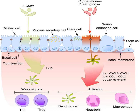The lung microbiota is the pulmonary microbial community consisting of a complex variety of microorganisms found in the lower respiratory tract, particularly on the mucous layer and the epithelial surfaces. These microorganisms include bacteria, fungi, viruses, and bacteriophages. The bacterial part of the microbiota has been more closely studied.